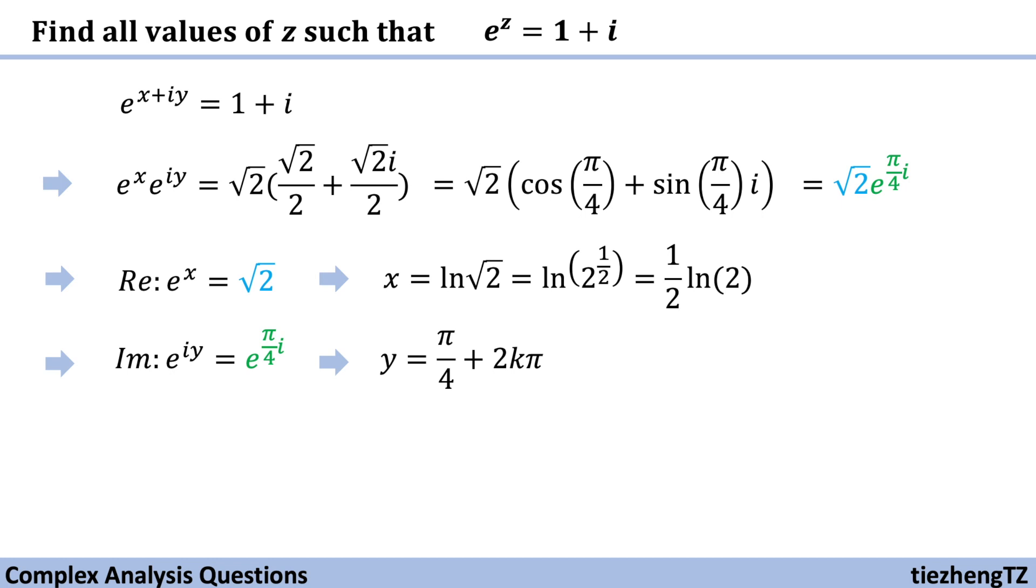However, in this question, we need to find all values of z. And we know it has a period of 2 pi. So in this case, we need to write down y is equal to pi over 4 plus 2k pi.